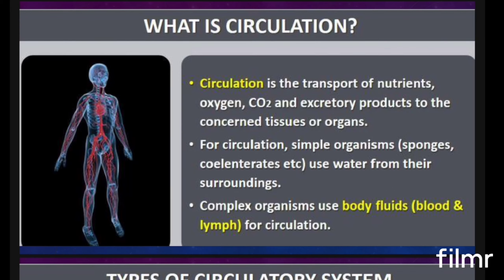In simple organisms like sponges and lower organisms such as Cnidaria, diffusion is enough for them to carry out circulation. Water from the surroundings helps with the exchange of gases like carbon dioxide through the diffusion process. But in complex organisms, there are special body fluids such as blood and lymph which act as the circulatory medium.